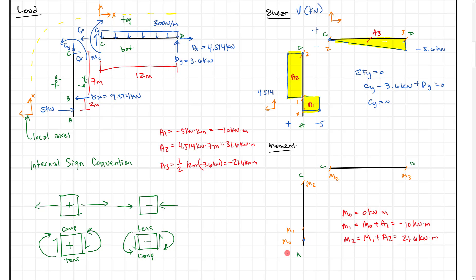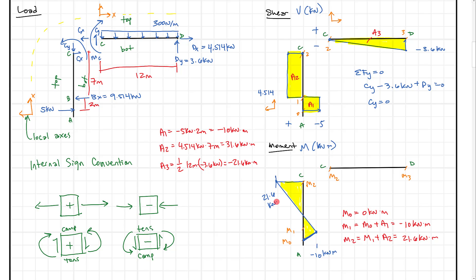Drawing the moment diagram for A to C: we start at zero, drop to minus 10 kilonewton meters at the 5 kN load — that's a straight line down. Then we come all the way up to positive 21.6 kilonewton meters at C, also a straight line. This makes sense: point loads produce straight-line shear, and straight-line shear causes linearly sloping moment. We label the 21.6 kilonewton meters point and shade the diagram.